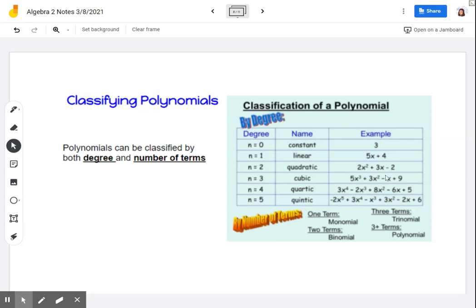For three terms, our example is the quadratic. It's got three terms. A quadratic term, a linear term, a constant term. There's three terms there. And then anything higher than three terms, we're just going to call it a polynomial.